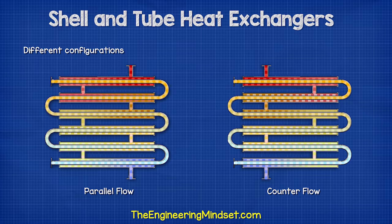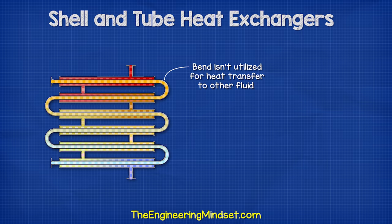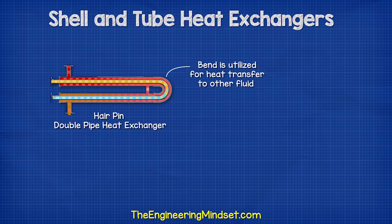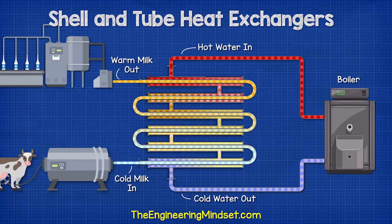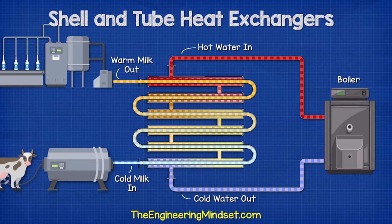The different configurations result in different temperature profiles and heat transfer. In this design the bend at each end isn't utilized for heat transfer and heat can be wasted here. However, manufacturing this heat exchanger is cheaper and easier. Other designs, like the hairpin type heat exchanger often found in oil refineries, encapsulate the bend to fully utilize the surface area for heat transfer. This version normally uses multiple tubes to maximize the surface area and thus increase heat transfer, although this will also increase the resistance. These are a fairly simple heat exchanger design and are very common, particularly in food processing as well as pharmaceutical production.